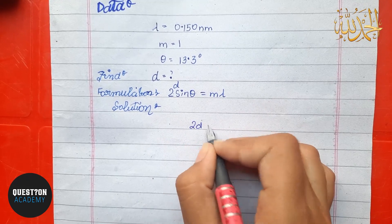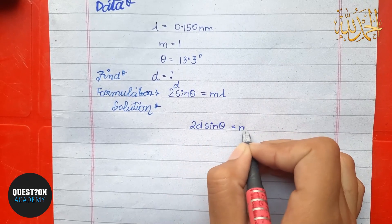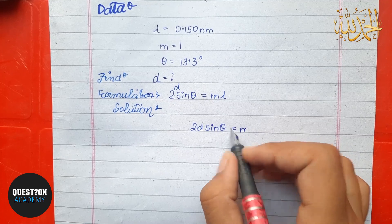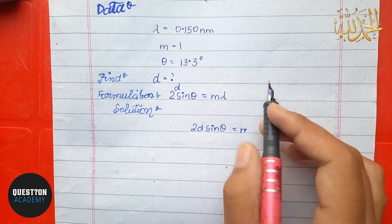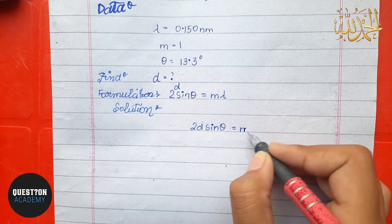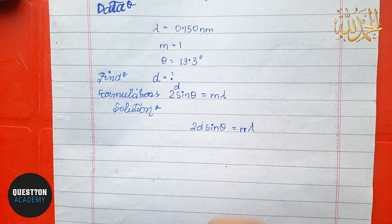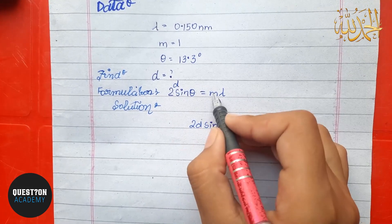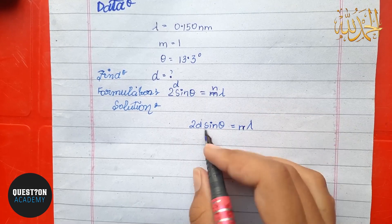The formula is 2d sin theta is equal to n lambda. I had written m lambda earlier, but the correct notation here is n lambda, so we use n lambda.